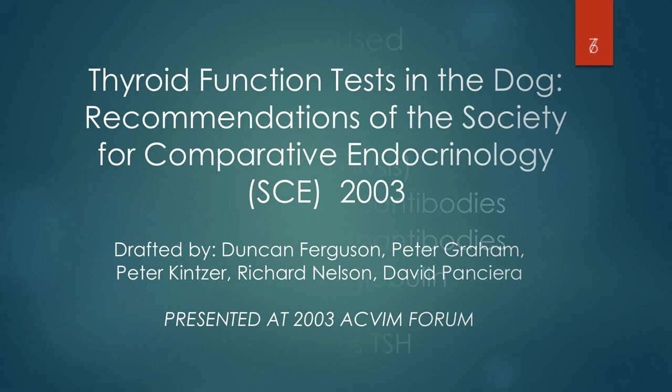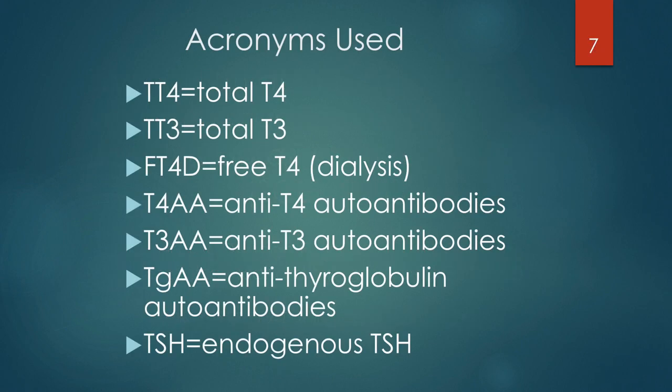Before we get started, it's useful to mention some of the acronyms we're going to use. TT4 is total T4, TT3 is total T3, FT4D is free T4 by dialysis. T4 autoantibodies, T3 autoantibodies, and thyroglobulin autoantibodies are going to be discussed in the context of autoimmune thyroiditis. And TSH is endogenous TSH.